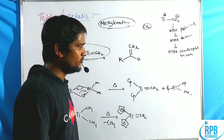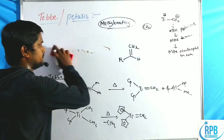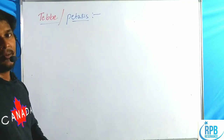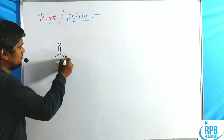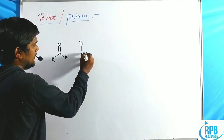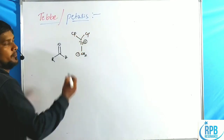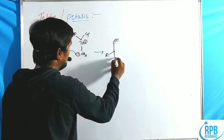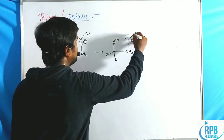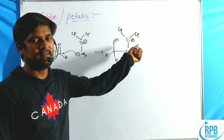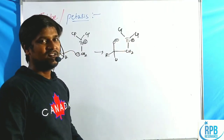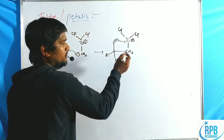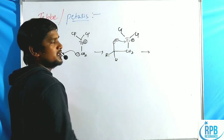The mechanism of Tebbe olefination begins with a carbonyl compound reacting with the nucleophilic titanium center. The nucleophilic CH₂ attacks the electrophilic carbonyl carbon, forming an oxametallacyclobutane intermediate with an O⁻ and Ti⁺ pair. Since titanium has low electronegativity, the O⁻ readily bonds to titanium.